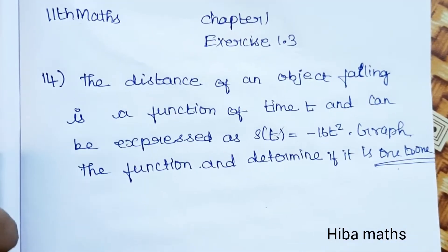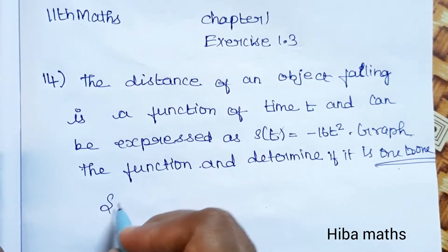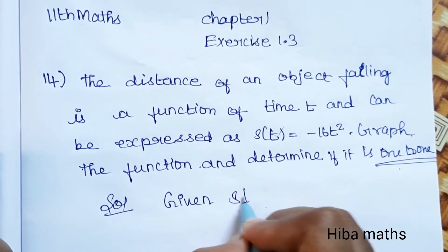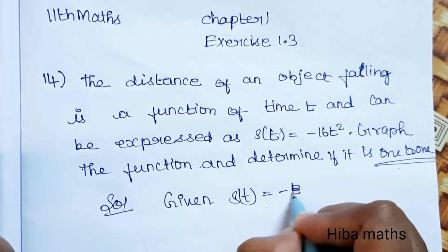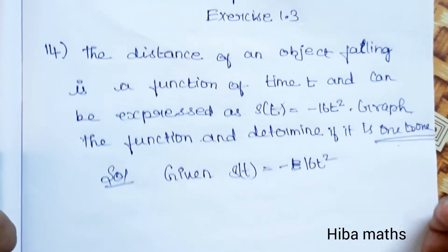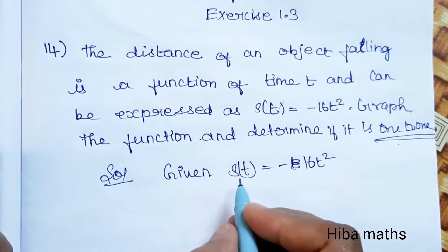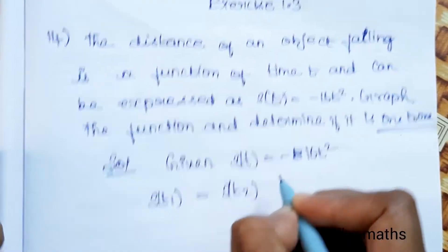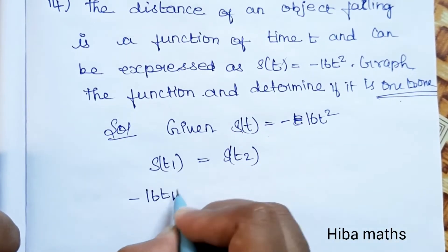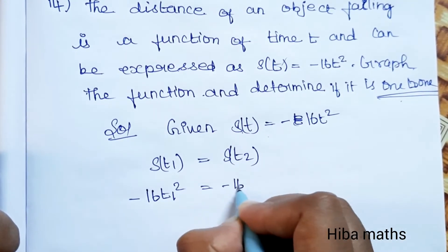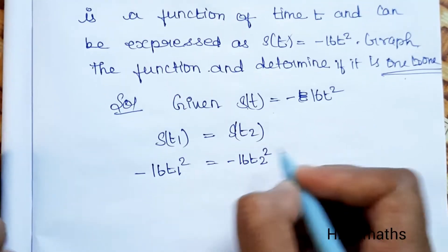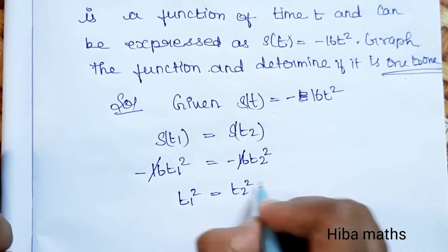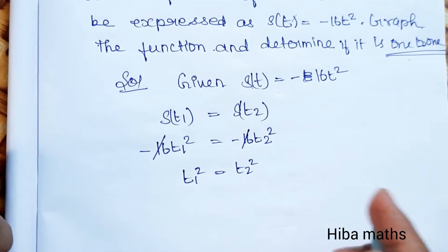To check if this is a one-to-one function, we test: if s(t1) = s(t2), then -16t1² = -16t2². Canceling -16, we get t1² = t2².